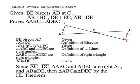And finally, since segment AC is congruent to segment DC, triangle ABC and triangle DEC are right triangles, and segment AB is congruent to segment DE — because of the Hypotenuse-Leg theorem, we can state that triangle ABC is congruent to triangle DEC. And that's it. Now it's your turn.